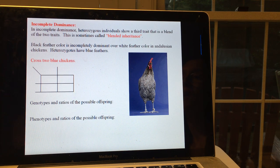It would be really convenient if one allele was always dominant to another allele, but it turns out that's not always the case. So there's a pattern of inheritance called incomplete dominance in which heterozygous individuals have a third trait that is a blend of the other two traits. This is sometimes referred to as blended inheritance.